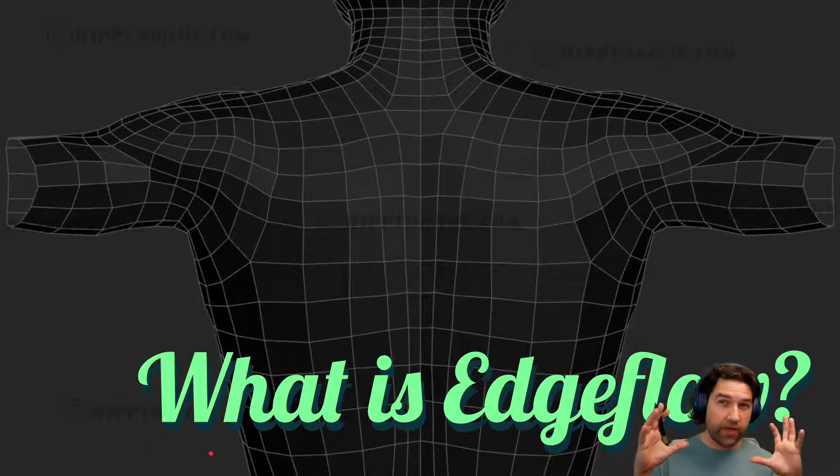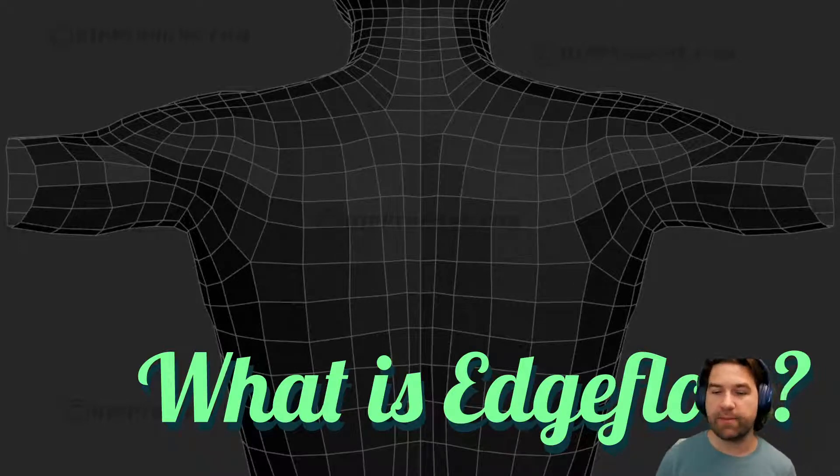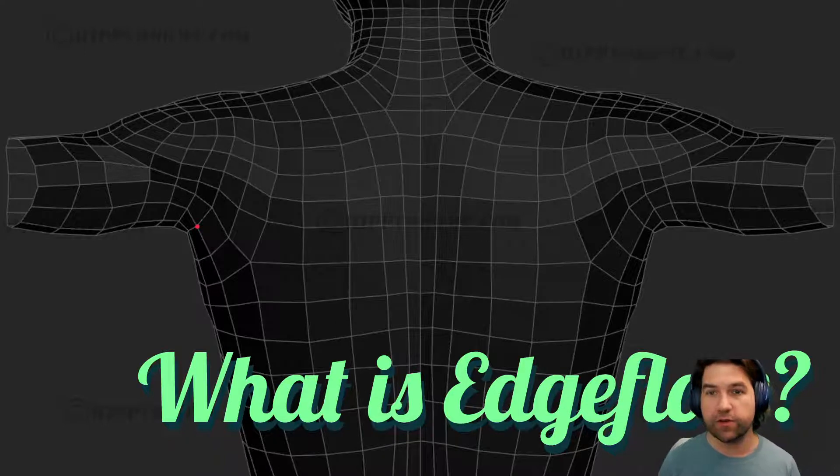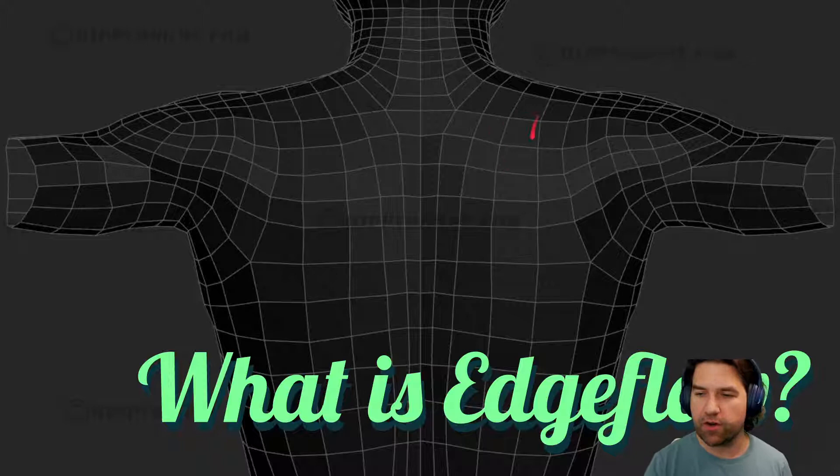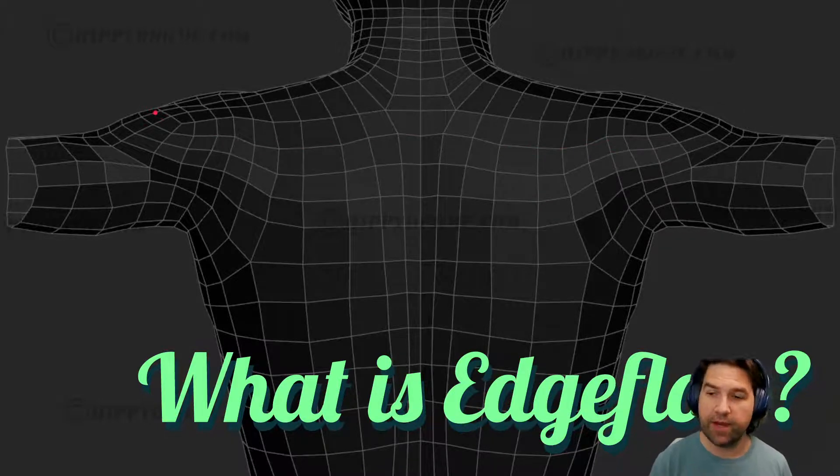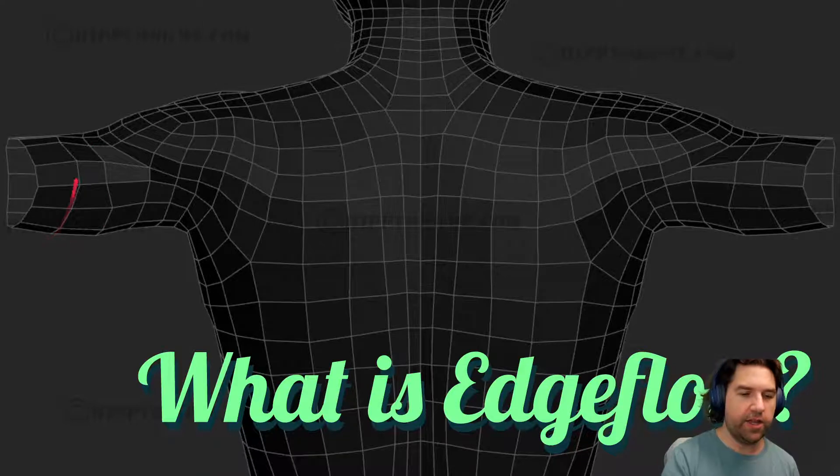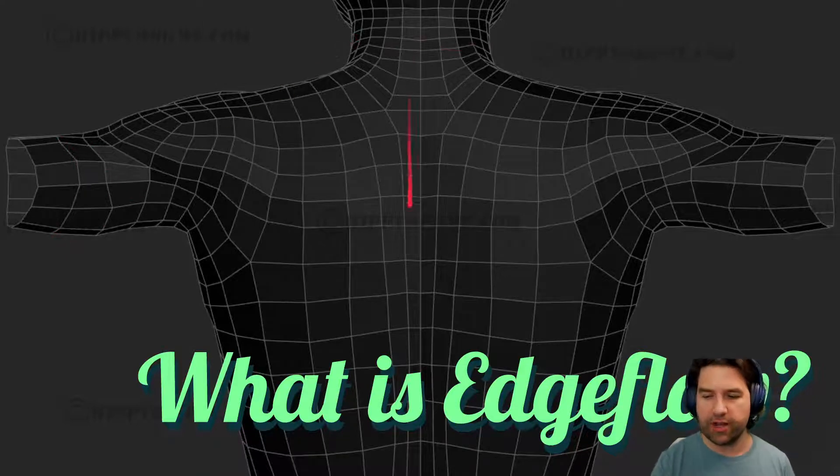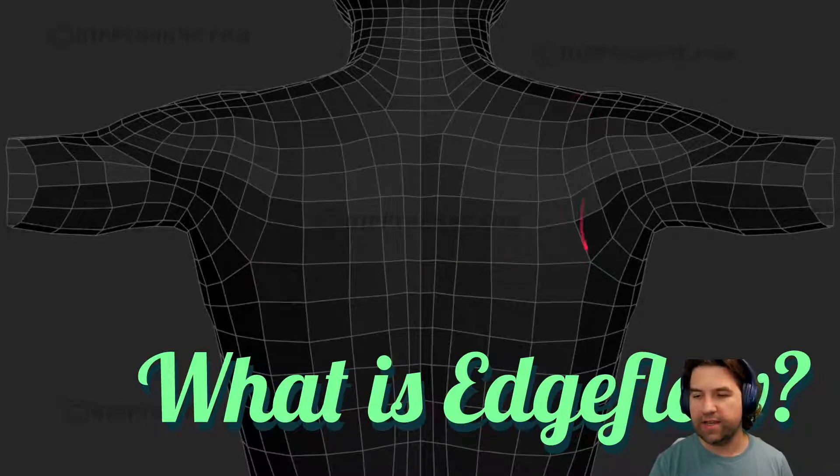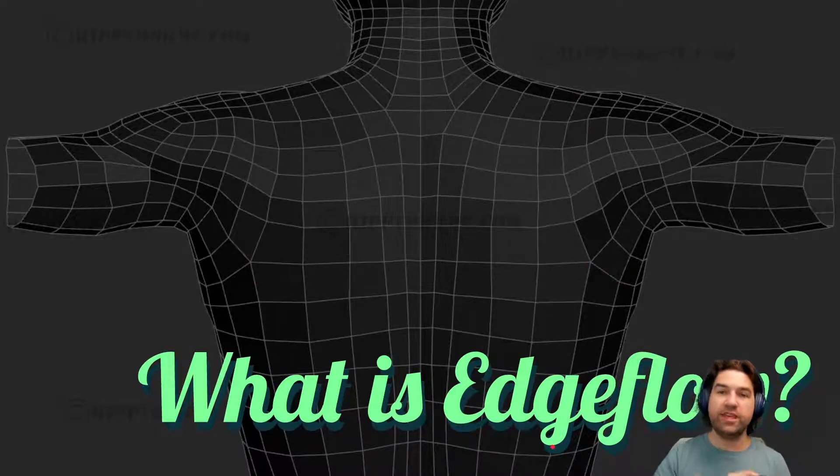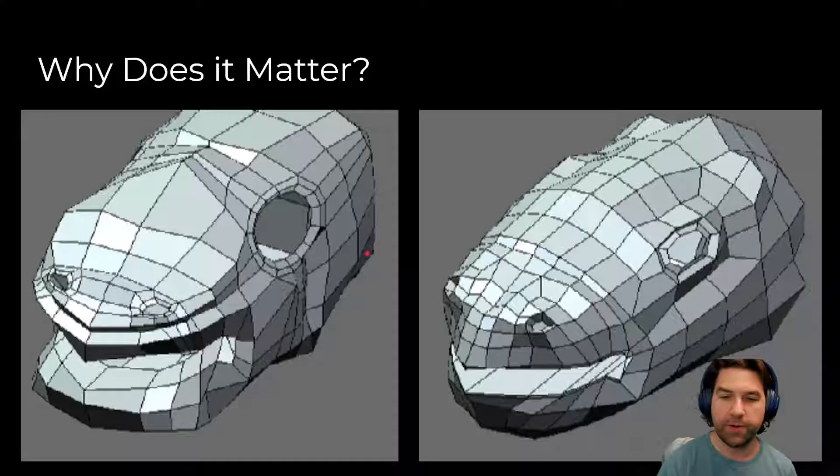With that understanding about what topology is, edge flow is the application of those principles to create good topology. Look at this example from Hippydrome. Not only does it have squares that are all quads, there's a real flow to the direction of these shapes. This might look similar to the topology on the body we made, and that's for a reason. We really want to make sure that it flows with the direction of shapes and objects and almost follows the musculature.